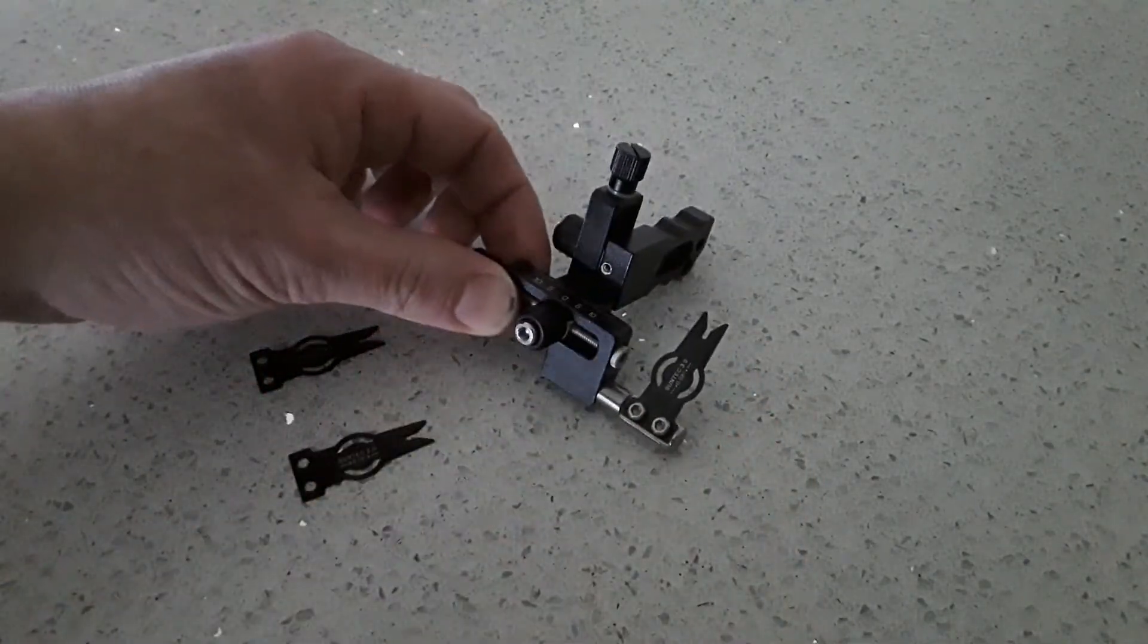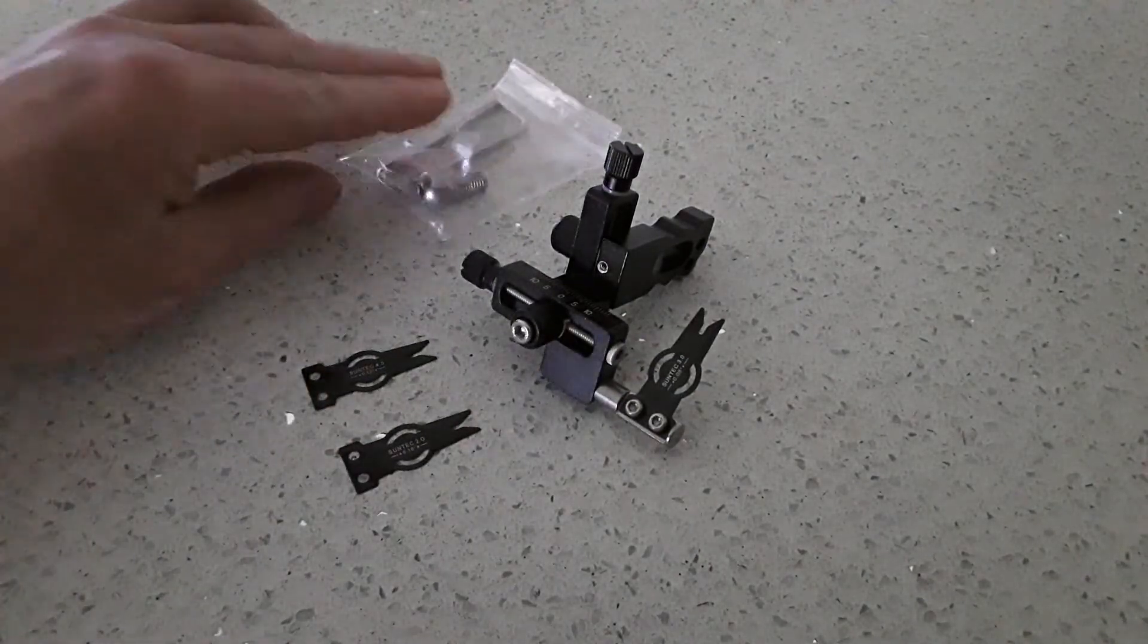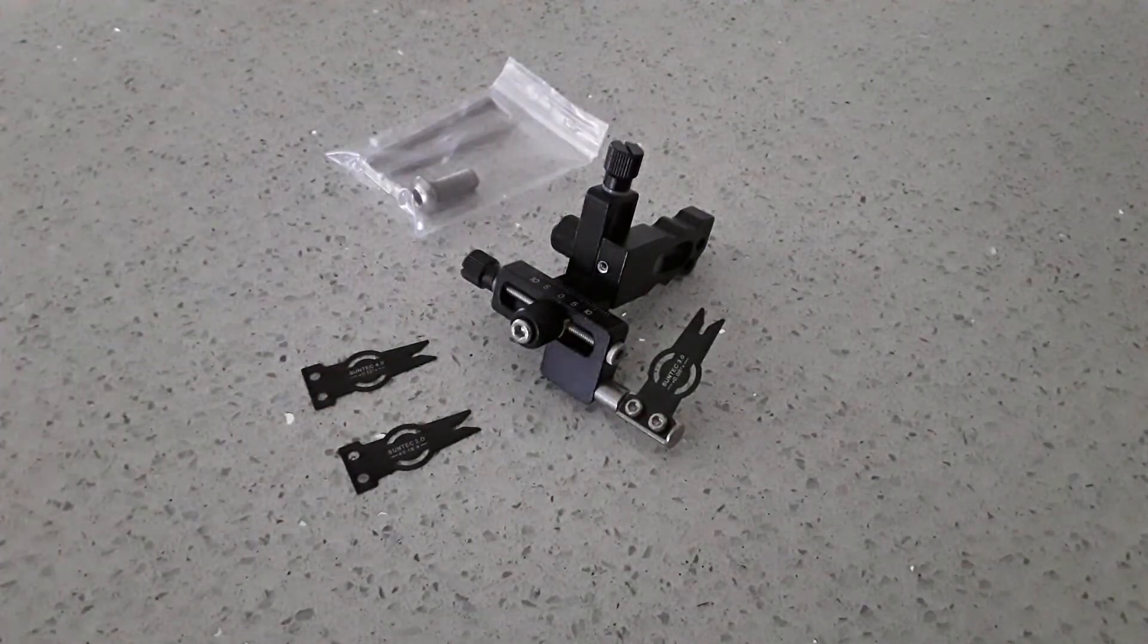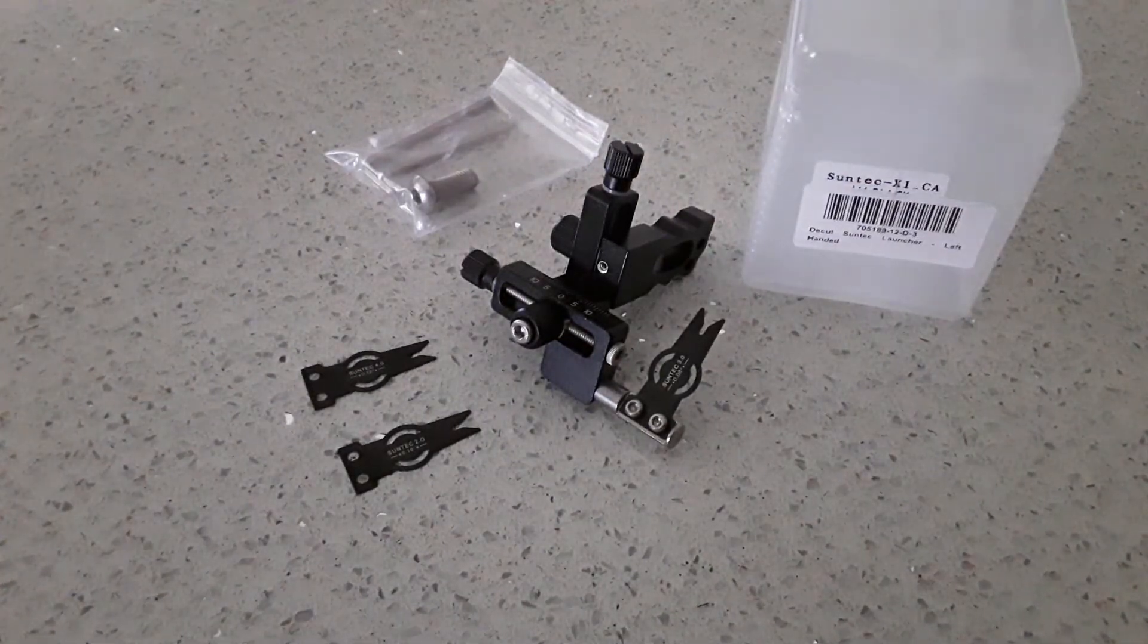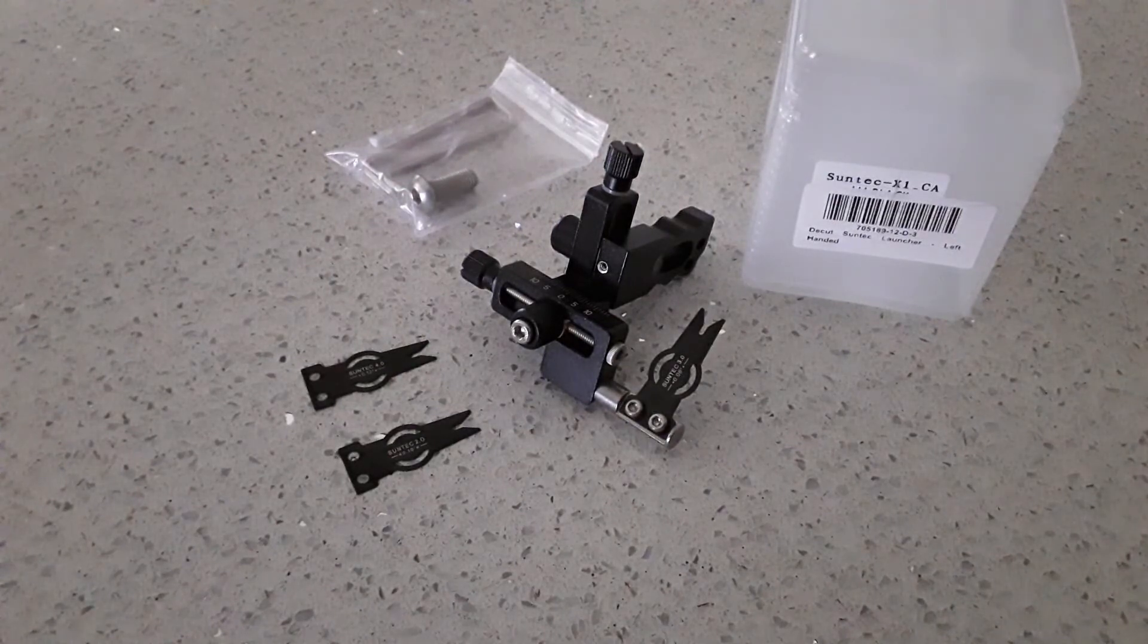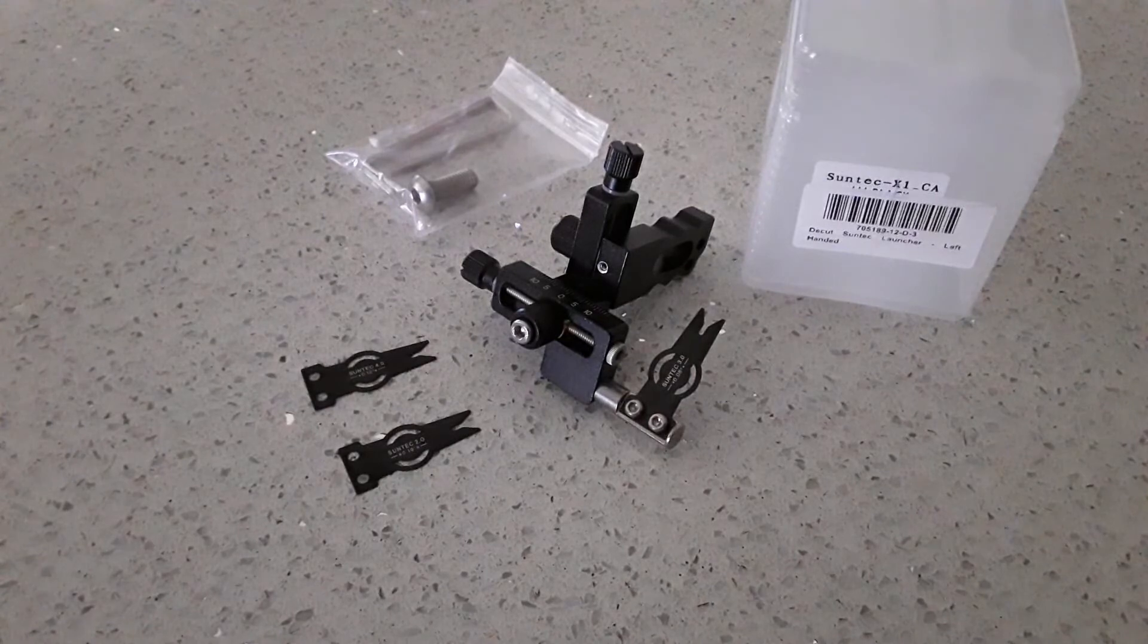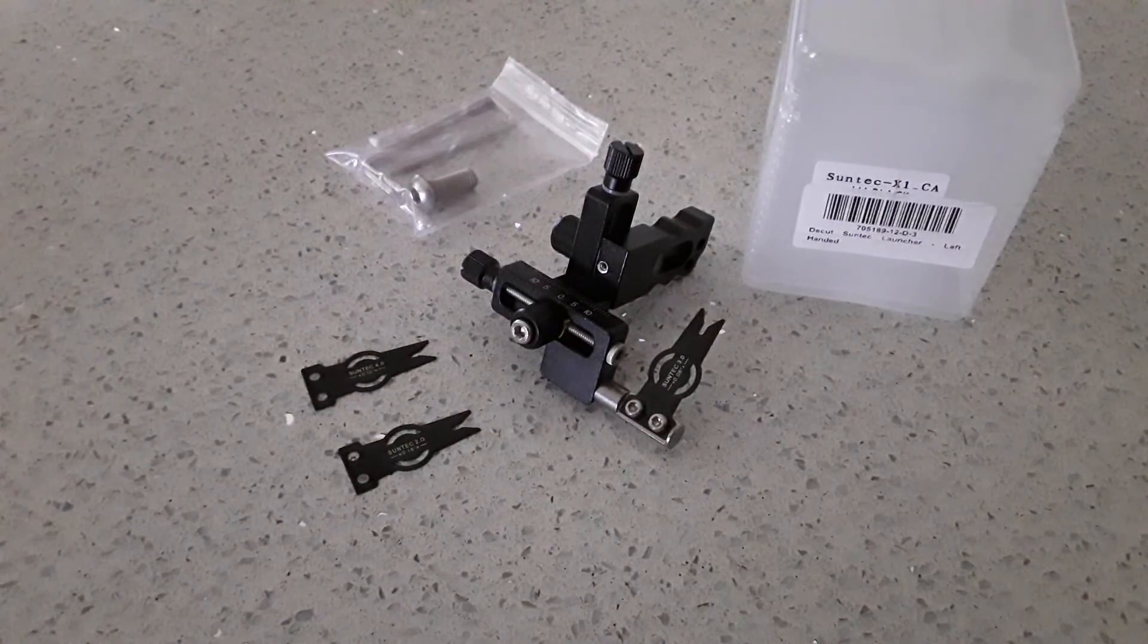As I said before, that first one is attached and you get two more with it. I haven't attached it yet to the compound bow, so I will do that next in another video. I just wanted to show you this because I don't think anybody else has really looked at it yet. That is the Decut Suntec arrow launcher.